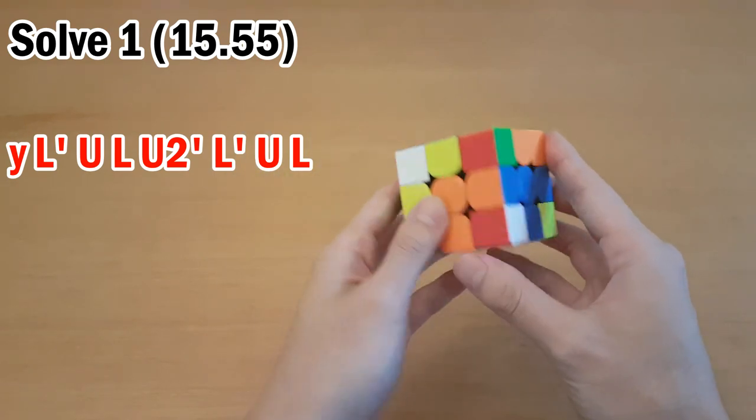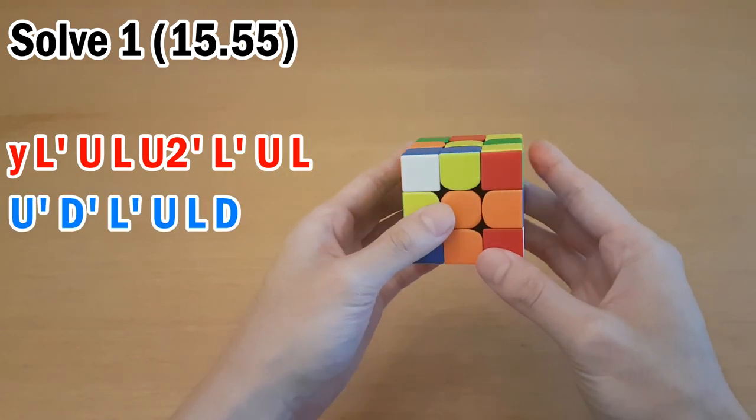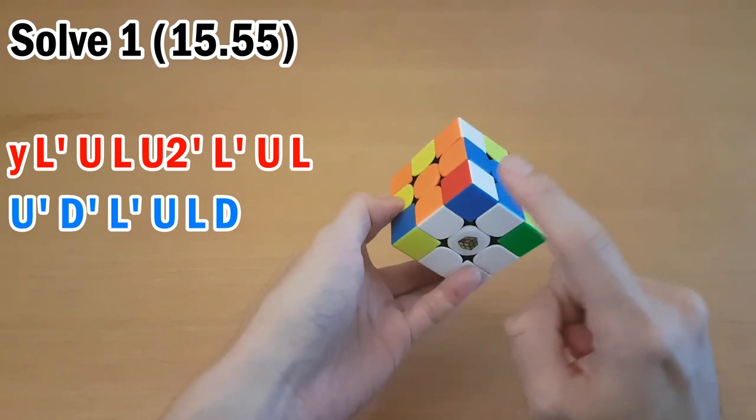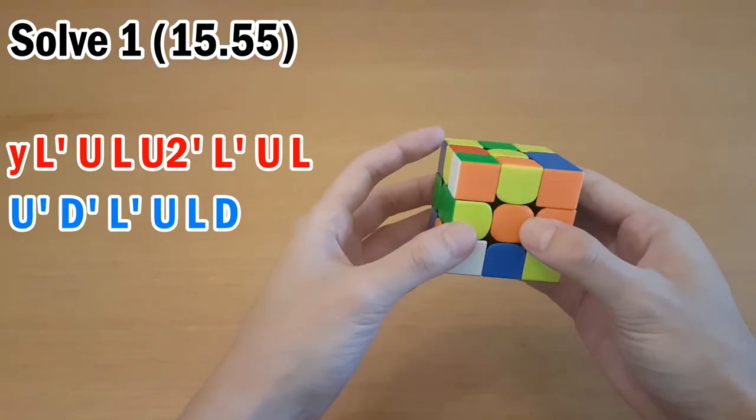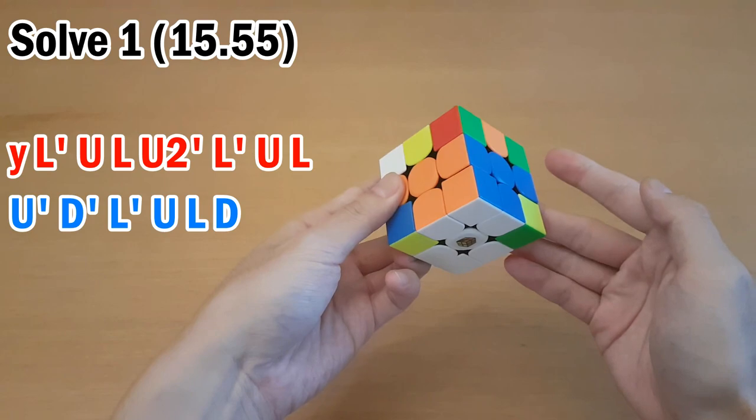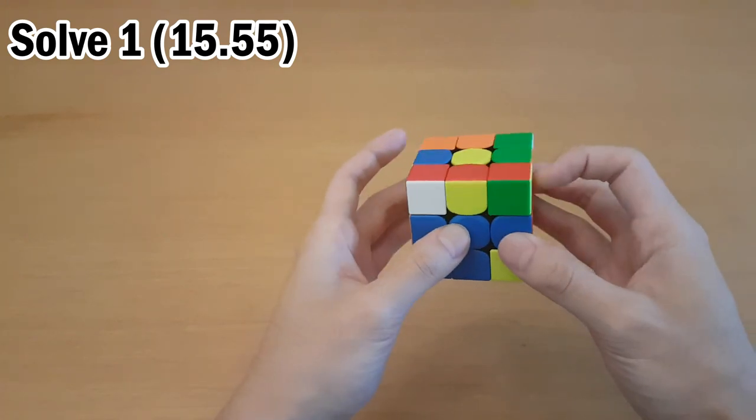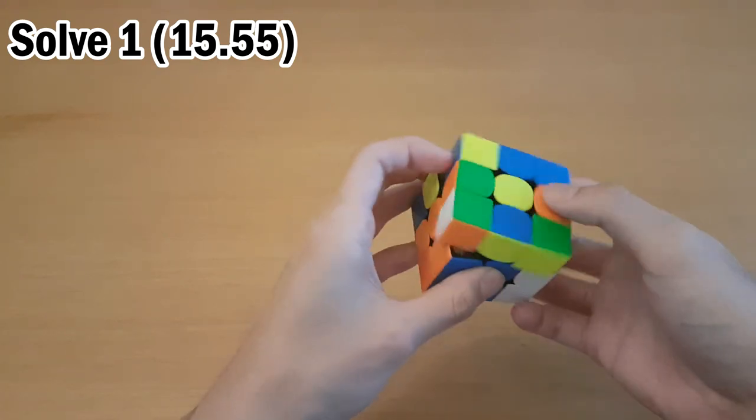But one more thing you can do, which is a little bit better here, is keyhole, and that is by inserting this corner into here by moving the correct spot over first. Insert, and then go back.